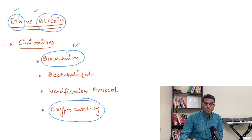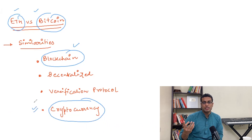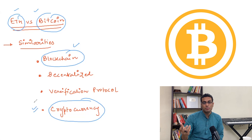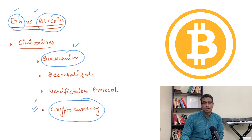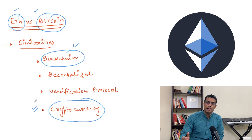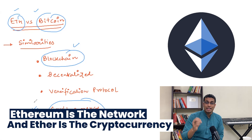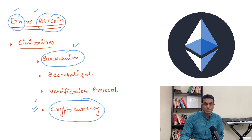Both Ethereum and Bitcoin have their own native cryptocurrencies. In Bitcoin's case, the name of the blockchain network is Bitcoin and the name of the cryptocurrency also is Bitcoin. In Ethereum's case, Ethereum is the network and Ether is the coin that you end up using.